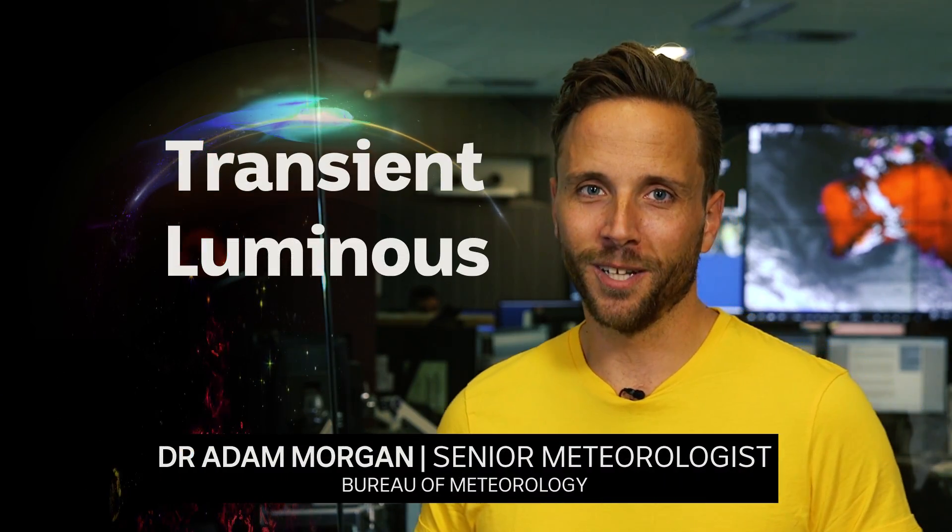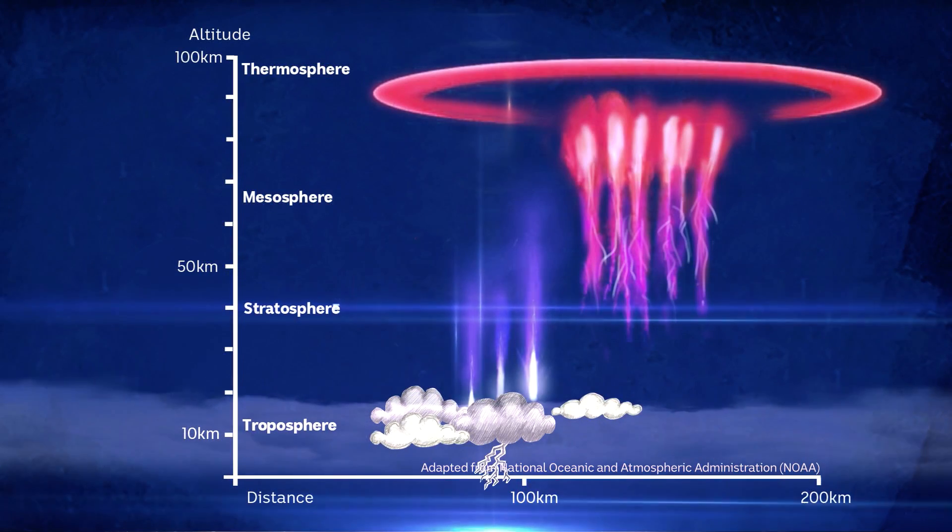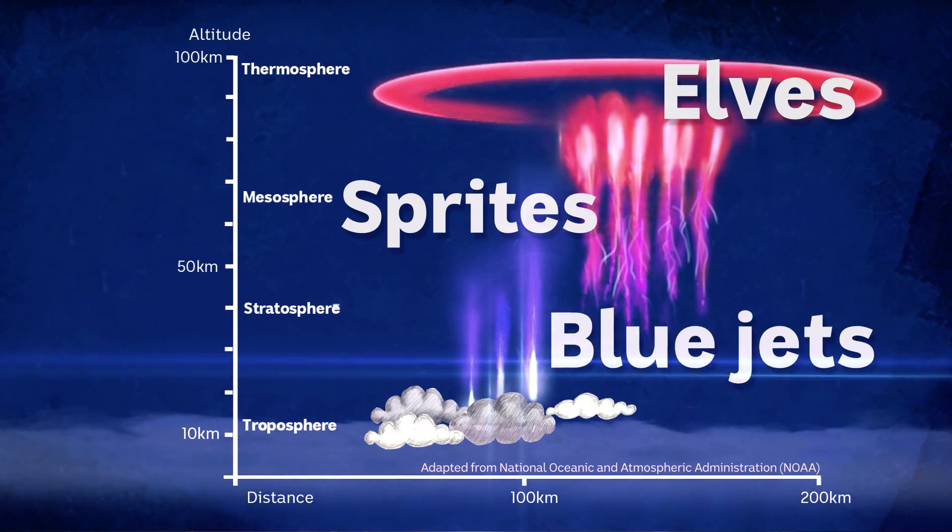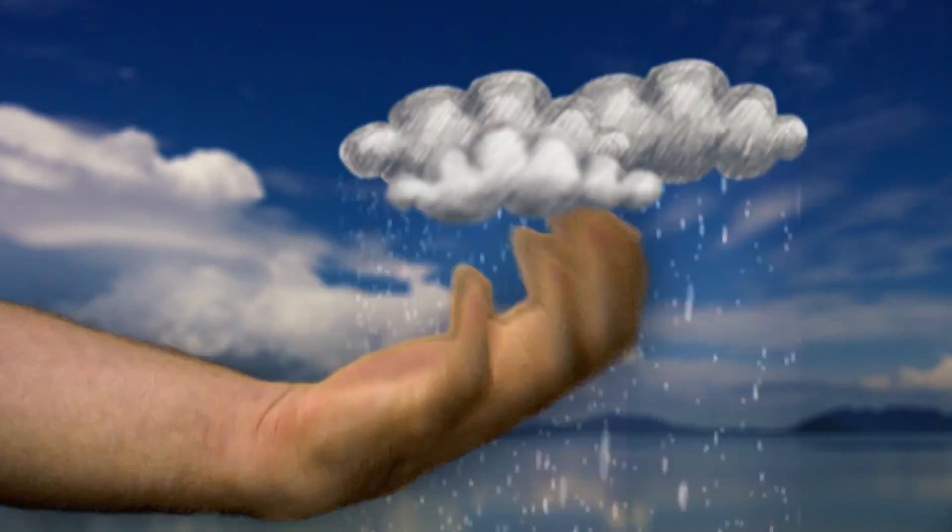They're called transient luminous events or TLEs. The TLEs we see most often are called sprites, elves and blue jets. But before we get any further with those, let's take a look at what lightning is.